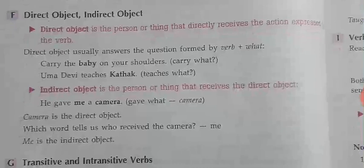The indirect object is the person or thing that receives the direct object. For example: 'He gave me a camera.' Gave what? A camera — that is the direct object. 'Me' is the indirect object, the person who receives the direct object.